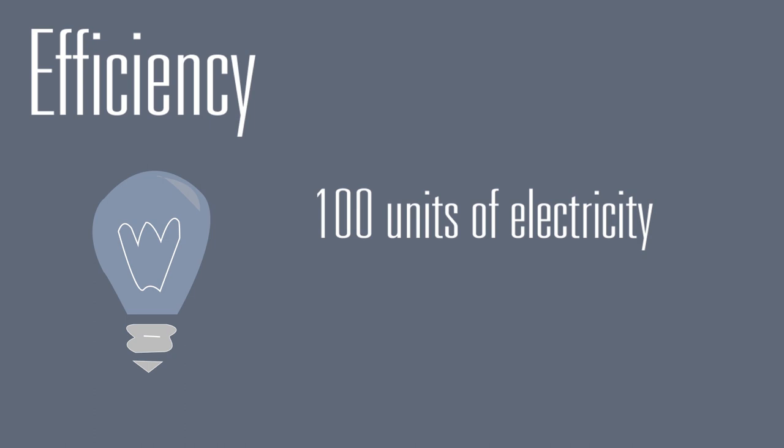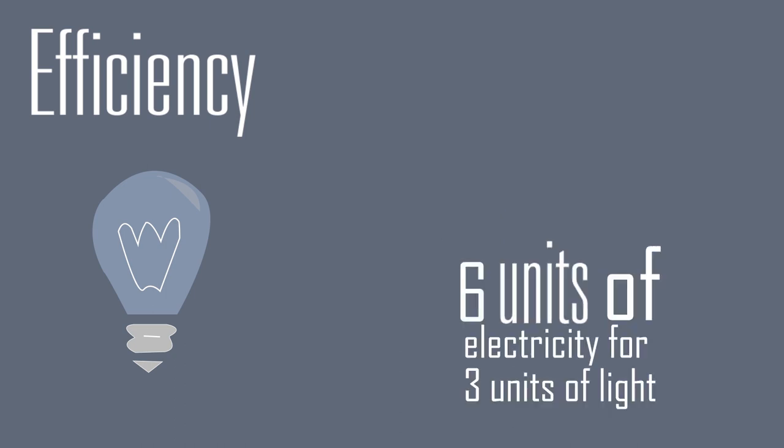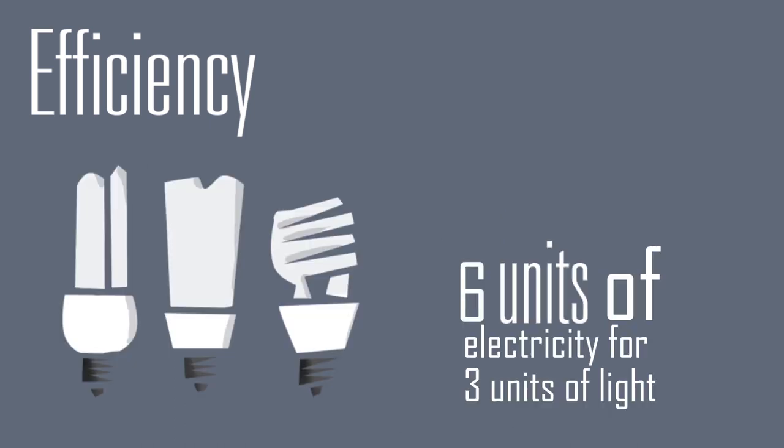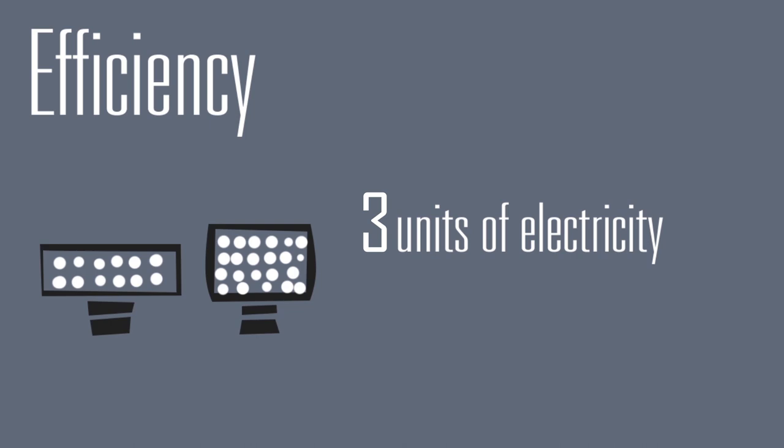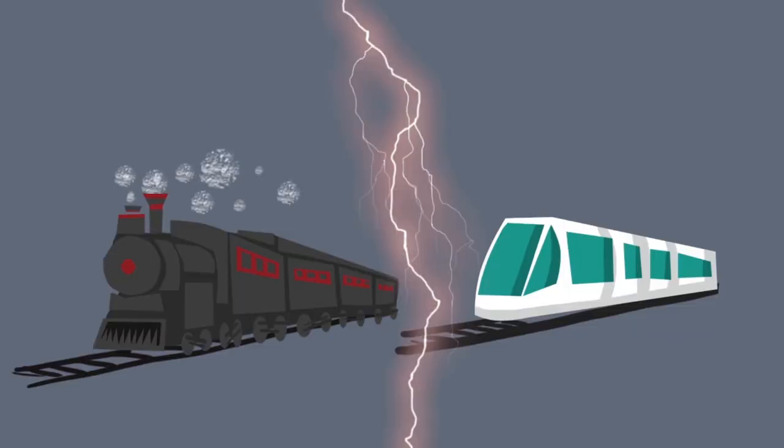Efficiency. Filament light bulbs use a hundred units of electricity to produce just three units of light. We should replace them either by fluorescent bulbs, which use only six units, or LEDs, which transform almost a hundred percent of the electricity into light, using only three units of electricity to produce the three units of light.